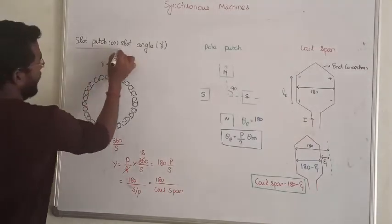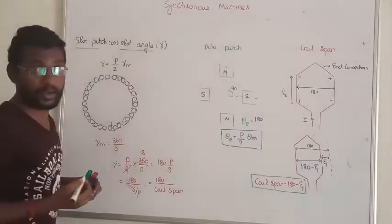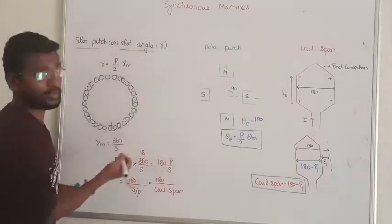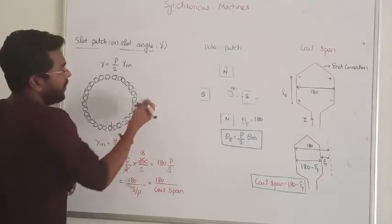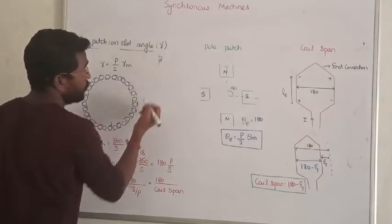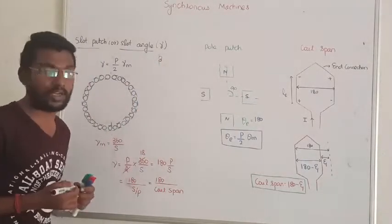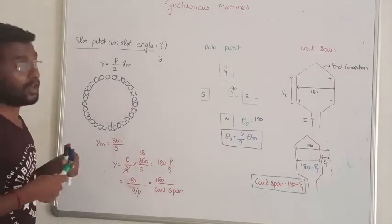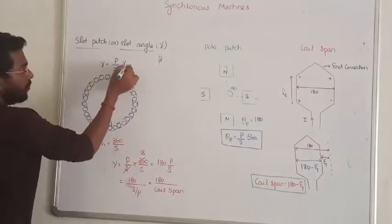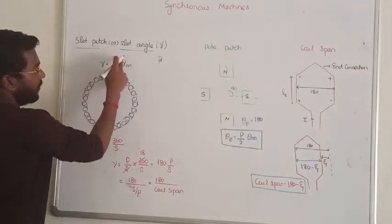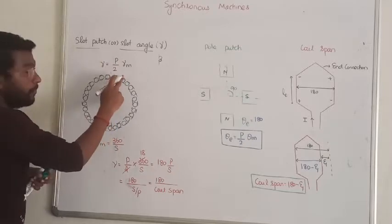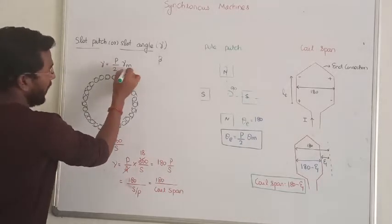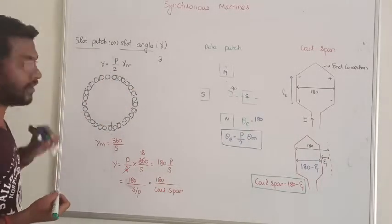Slot pitch is a slot angle. The slot angle is usually denoted by gamma. Sometimes in the exam, we are going to use beta. So we are going to talk about the mechanical angle and electrical angle. Beta can be written as the number of poles divided by 2, multiplied by the mechanical degree offered by the slot angle.